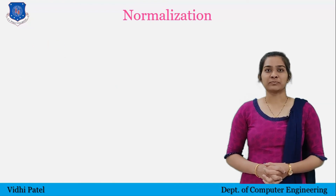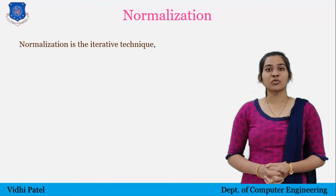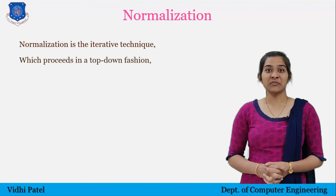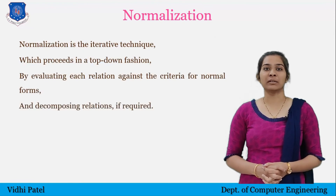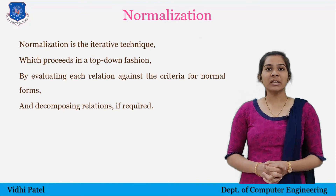Let's see what normalization is. It is the aim of a well-designed relational database management system. Normalization is an iterative process — a step-by-step set of rules by which data is put in its simplest form. It proceeds in a top-down fashion by evaluating each relation against the criteria for normal forms and decomposing the relation if required. It is a multi-step process that puts data in tabular form, splits larger tables into smaller tables, and defines relationships between them to increase clarity in organizing data.